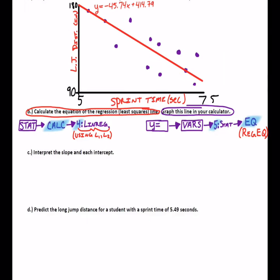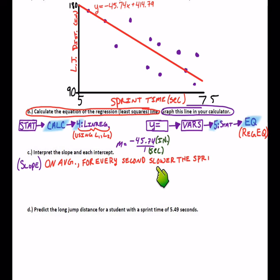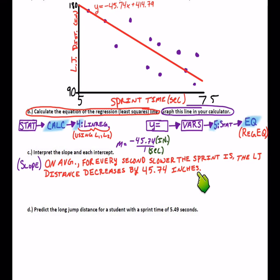Part C says interpret the slope and each intercept. The slope is -45.74, which we can think of as -45.74 over 1. The x variable was seconds on the bottom, and inches on top. So: on average, for every second slower the sprint is, the long jump distance decreases by 45.74 inches. That's not a hard, fast rule — it's just a prediction, just on average.